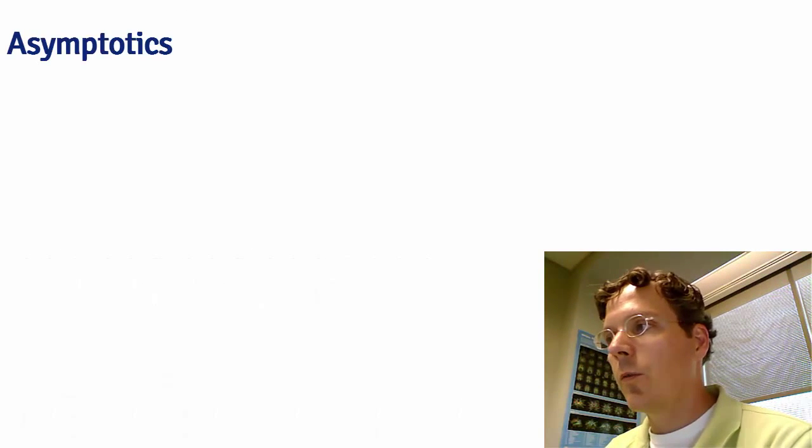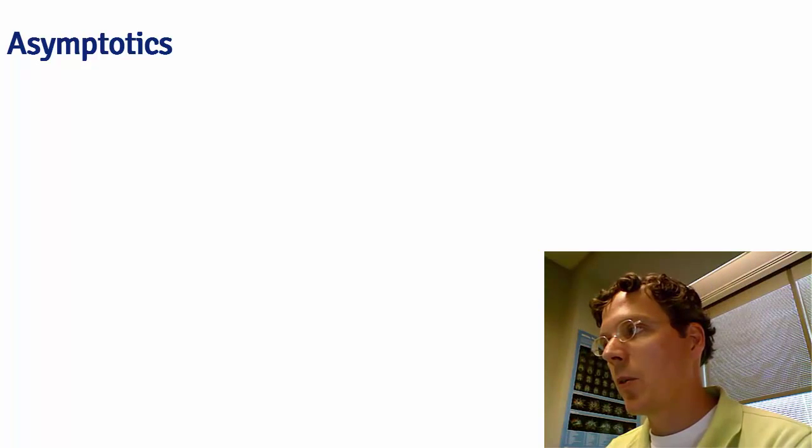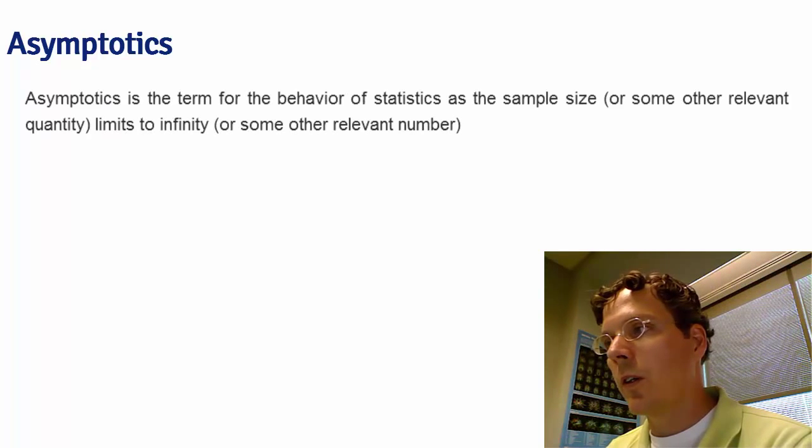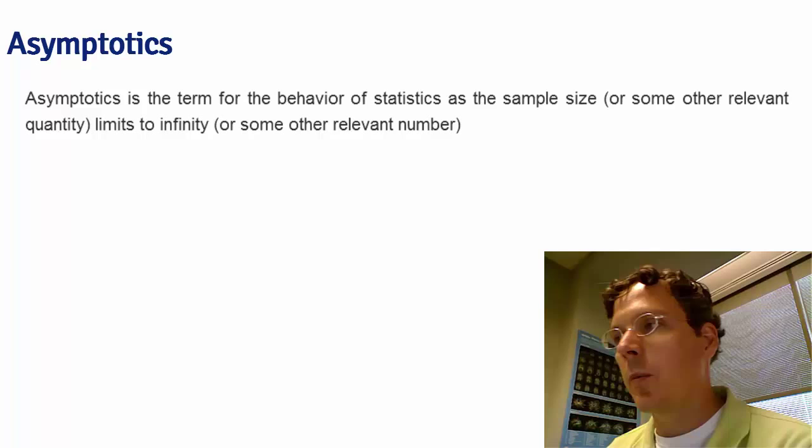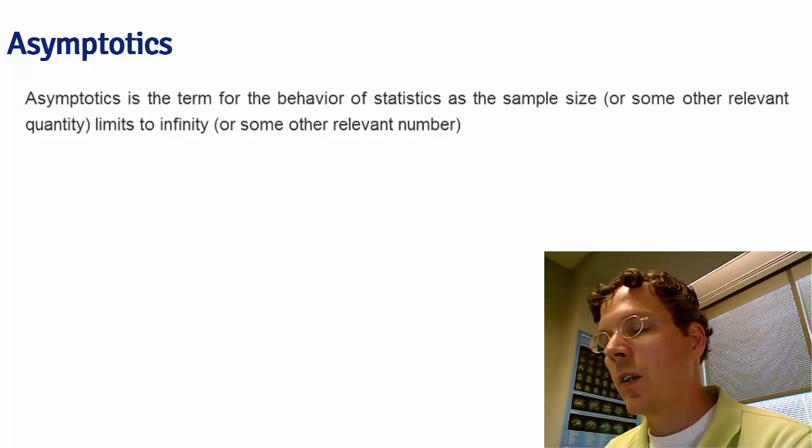Asymptotics is the term for the behavior of statistics as the sample size or some other relevant quantity limits to infinity, or in some cases as something else limits to zero. We're going to deal only with the case where the sample size is the quantity that's limiting to infinity.